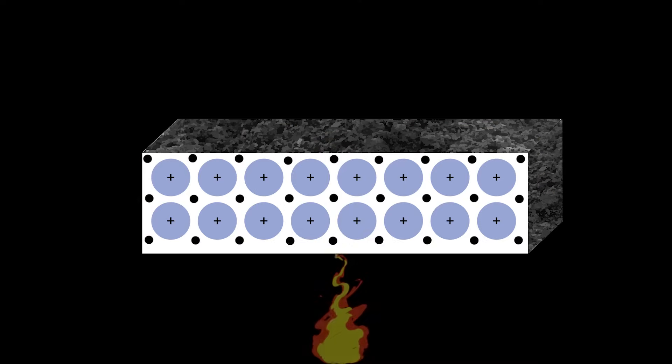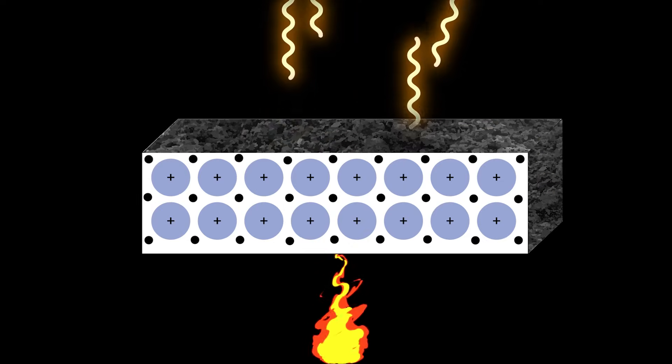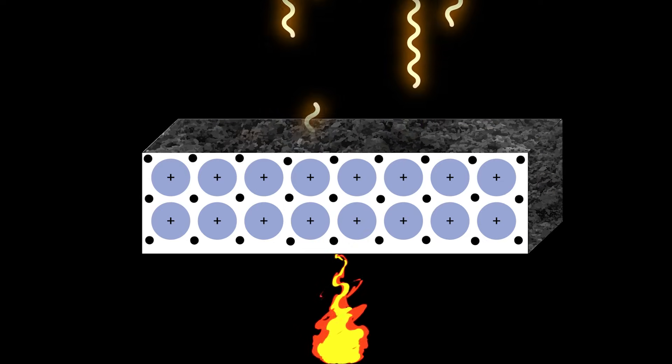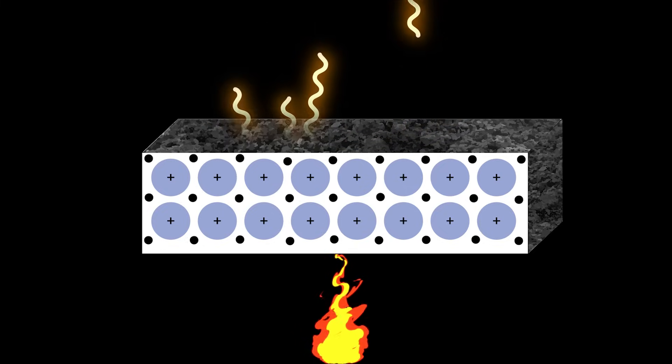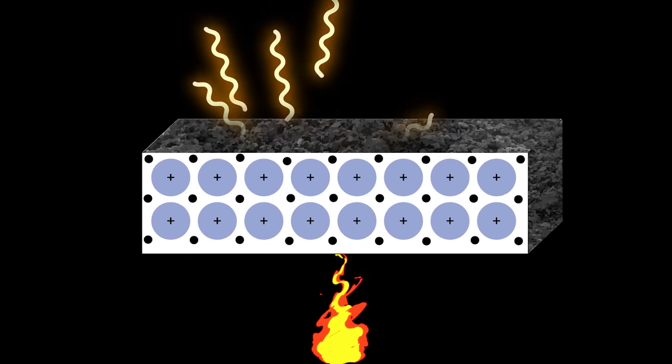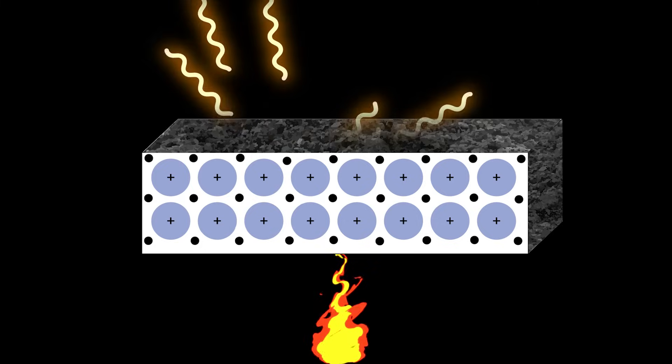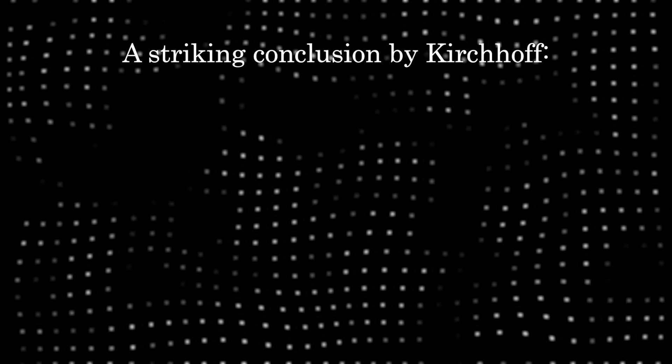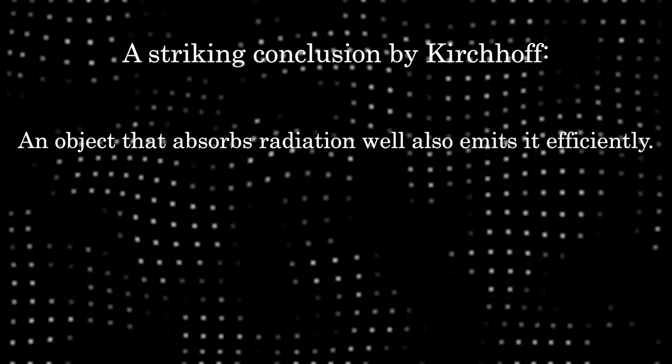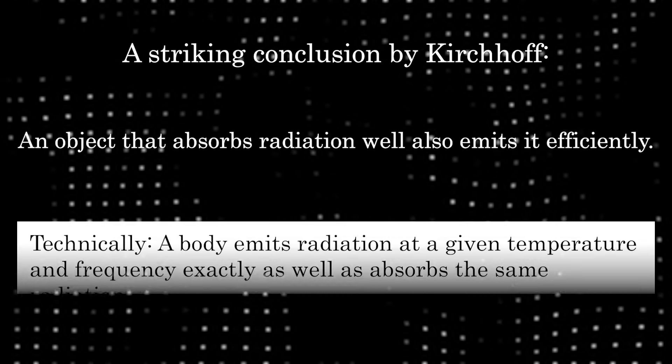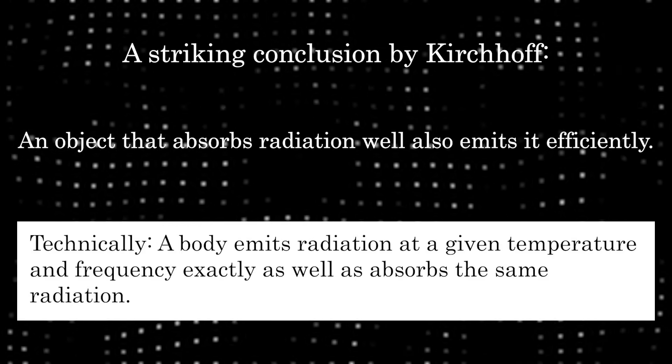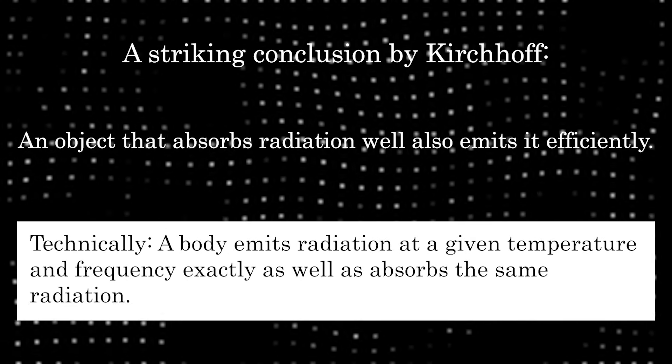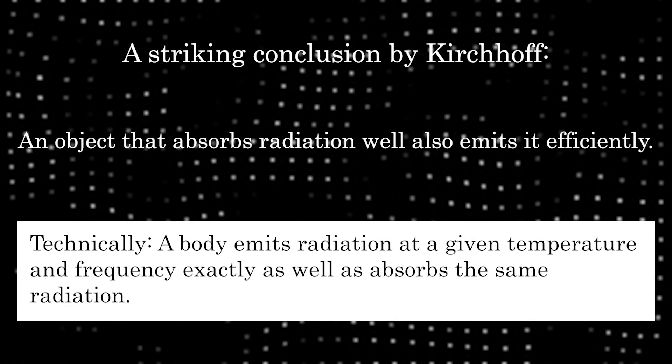Having understood how the radiation gets absorbed, what about the reverse? Why does it radiate when heated? When heated, these charges inside the soot move around and bounce off nearby atoms. These bounces cause the charges to accelerate, and according to Maxwell's theory, accelerating charges emit electromagnetic radiation. Therefore, soot efficiently emits radiation when heated. It is evident from considerations like this that good radiation absorbers are also good emitters. This was Kirchhoff's main conclusion. A body emits radiation at a given temperature and frequency exactly as well as absorbs the same radiation.